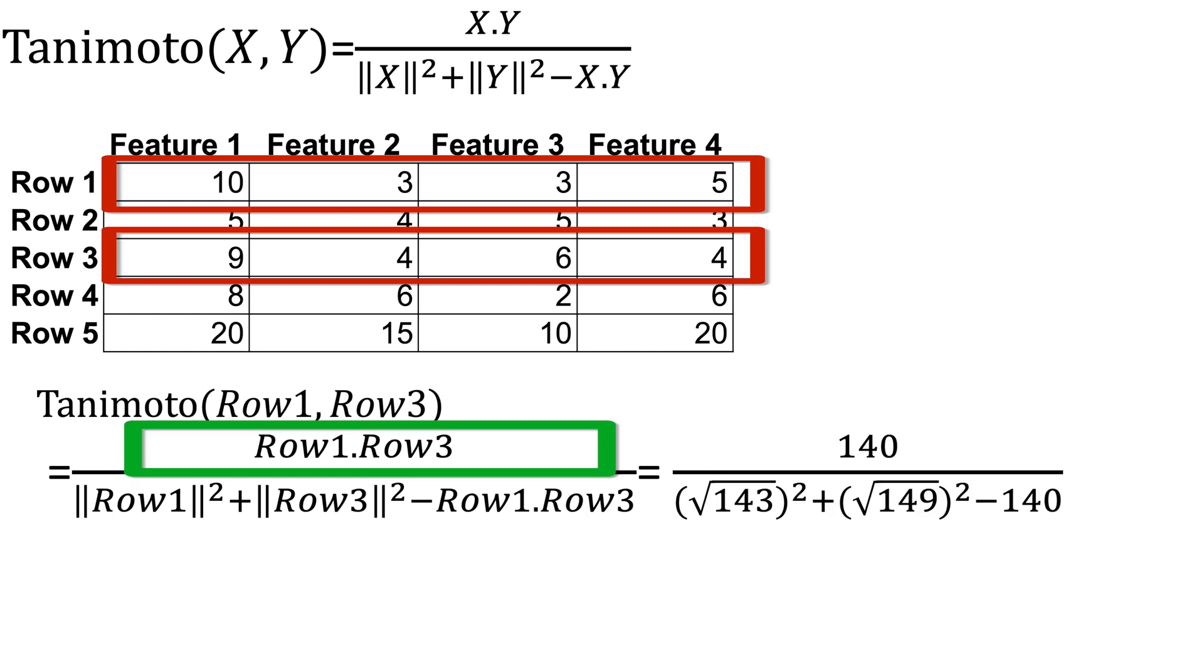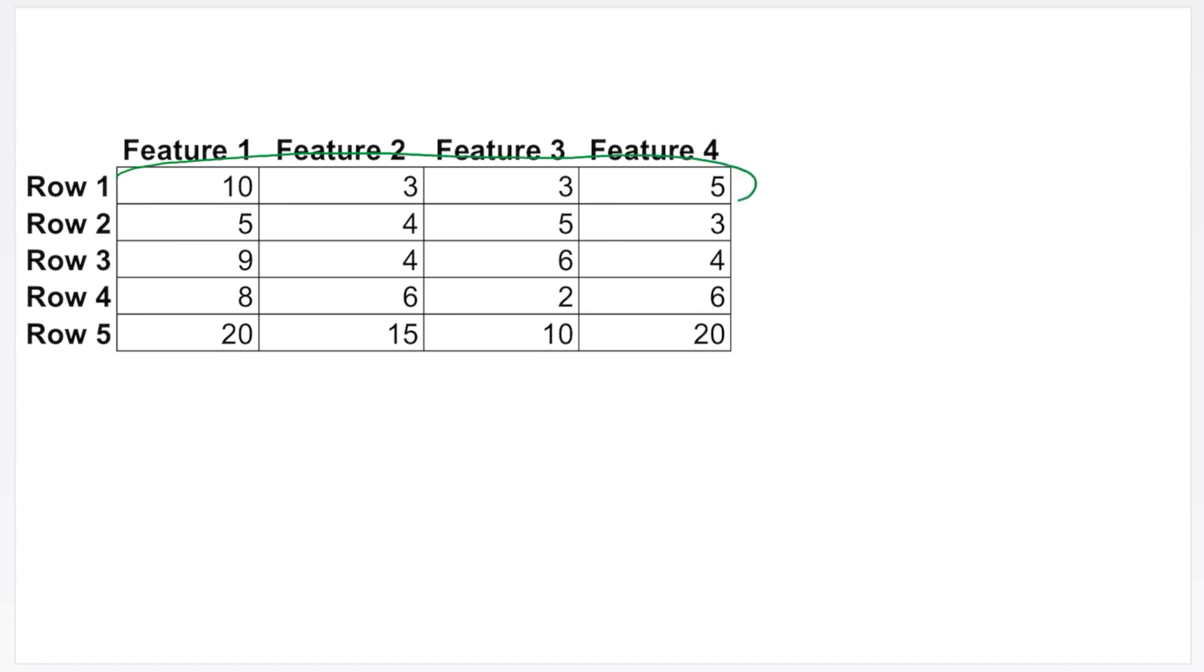The dot product of row 1 and row 3 is 140. The norm of row 1 is square root of 143. The norm of row 3 is the square root of 149. The dot product of row 1 and row 3 is 140. Let us watch quickly how we computed the dot product between row 1 and row 3, as well as how we computed the norms of row 1 and row 3.